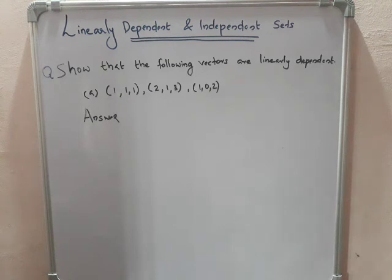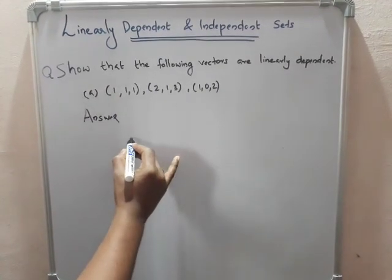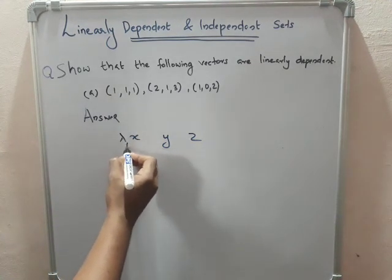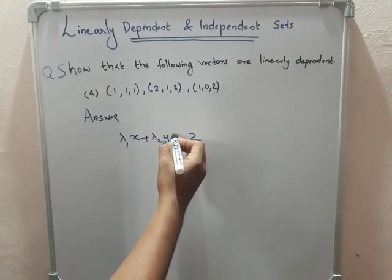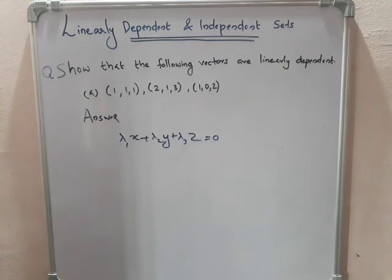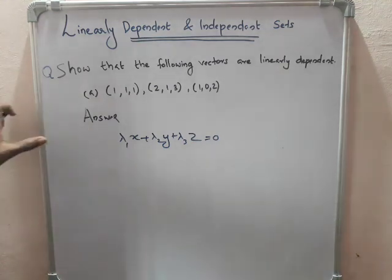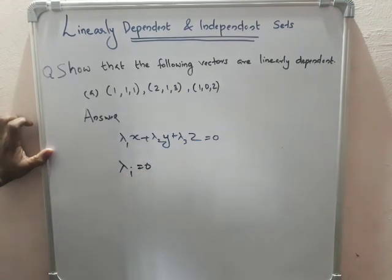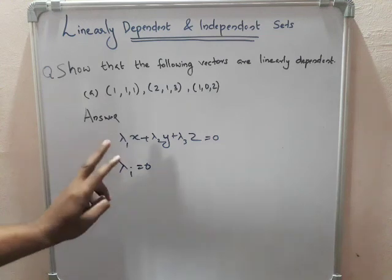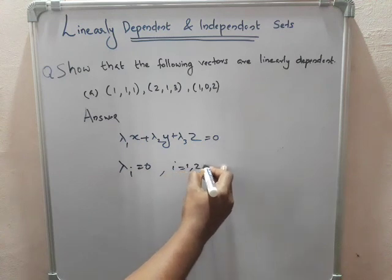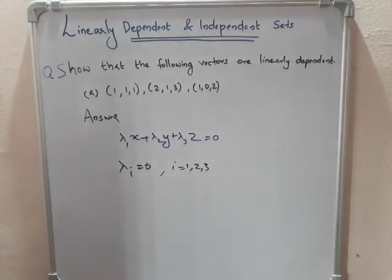Now, let's say lambda one plus lambda two y plus lambda three x is equal to zero. In this equation, we consider the lambda values. This is the linear combination formula. If it is equal to zero, it is linearly independent.